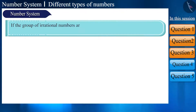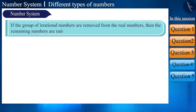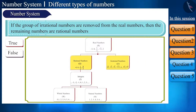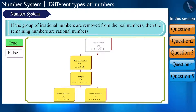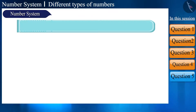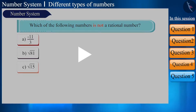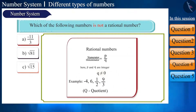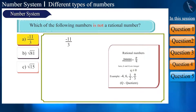If the group of irrational numbers is removed from the real numbers, then the remaining numbers are rational numbers. State whether this statement is true or false. Now, state which of the given numbers is not a rational number. The first option is minus 11 by 3. By definition, both minus 11 and 3 are integers and the denominator is not 0. Therefore, it is a rational number. The second option is square root of 81, which is 9, and that is a rational number.